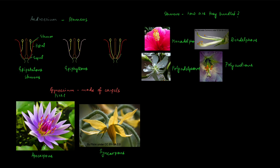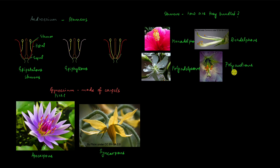To summarize, we have looked at how the androecium can be attached to petals or tepals and are called epipetalous or epiphyllous; how they can be bunched into one bundle called monadelphous, two bundles called diadelphous, or many bundles called polyadelphous; or they are completely separate and called polyandrous. In the gynoecium, carpels can be all separate and are called apocarpous, or the carpels can be fused together and are called syncarpous.